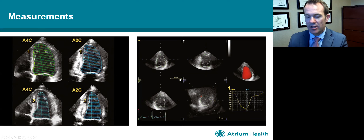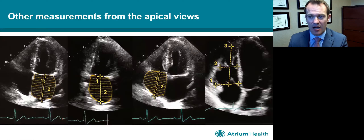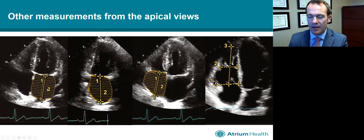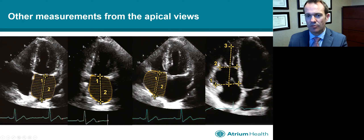We also now recommend doing 3D volumes — it really comes down to how good your image quality is, and you want your frame rate as high as possible. We also want to measure the left atrial volume at end systole, excluding the pulmonary veins and the left atrial appendage and drawing a straight line from the annulus to the posterior wall in both four-chamber and two-chamber views using the area length method or summation of discs. We do a similar thing for the right atrium in a single plane, and we measure the RV linear dimensions and ideally the RV area using the RV focus view.